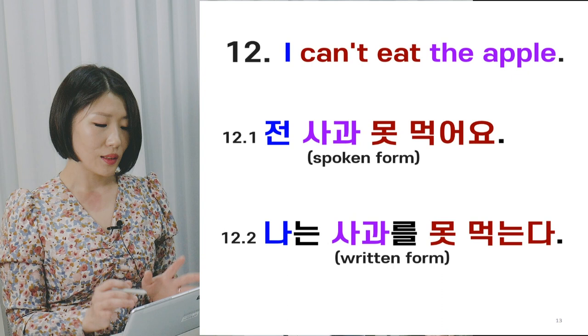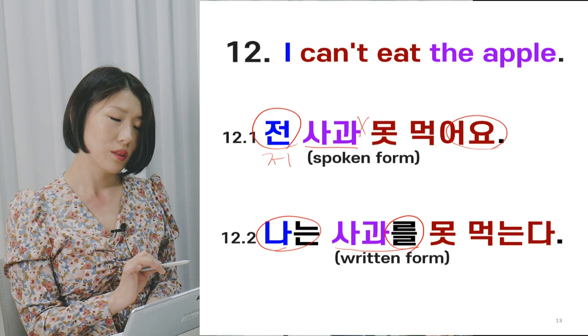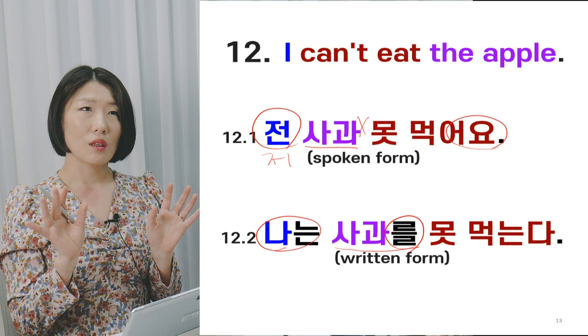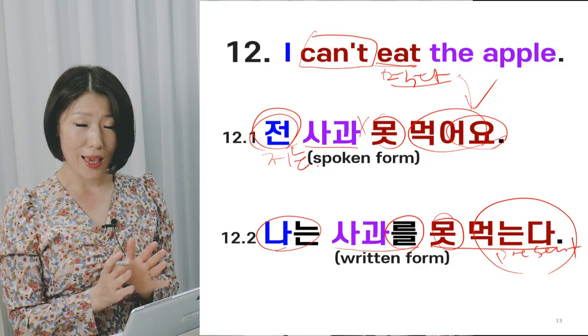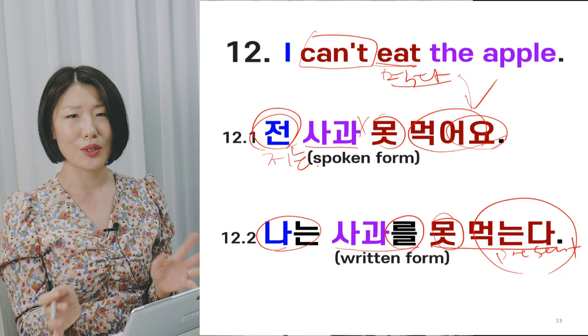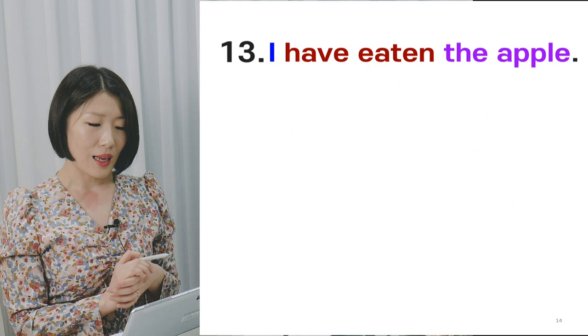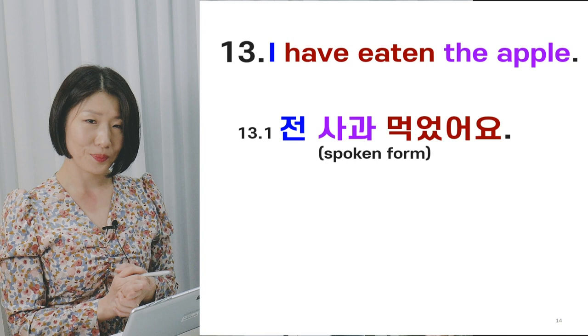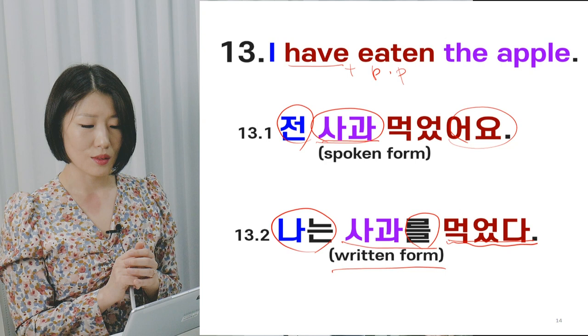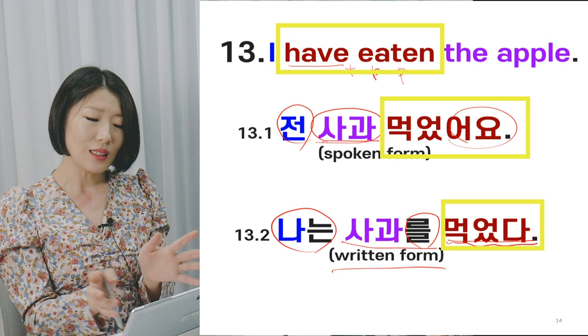Sentence 12: 'I can't eat the apple.' In the spoken form, the object particle is omitted — in spoken Korean there are many omissions and abbreviations, and the object particle is commonly deleted. As a bonus sentence 13: 'I have eaten the apple.' There are only three major tenses in Korean — present, past, and future — so the present perfect tense is expressed using the past tense in Korean.